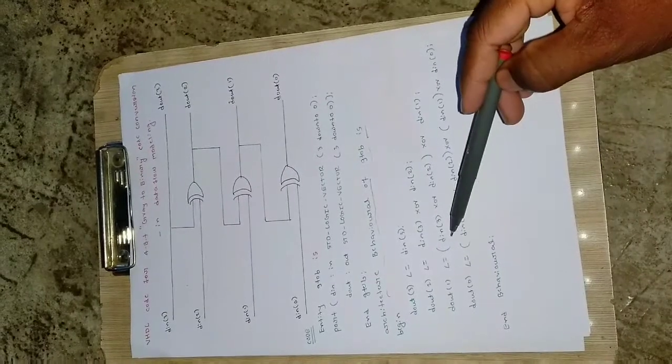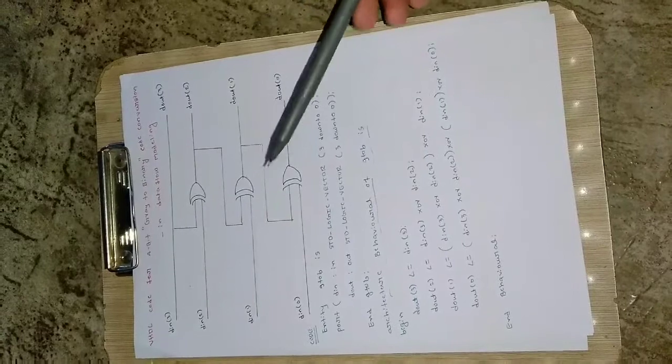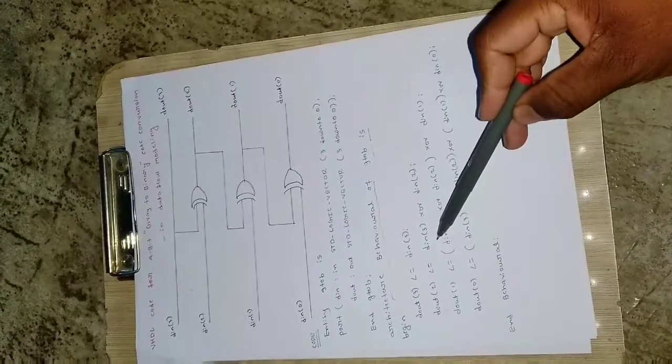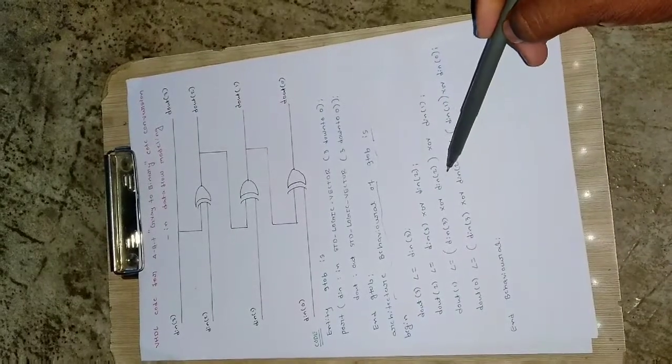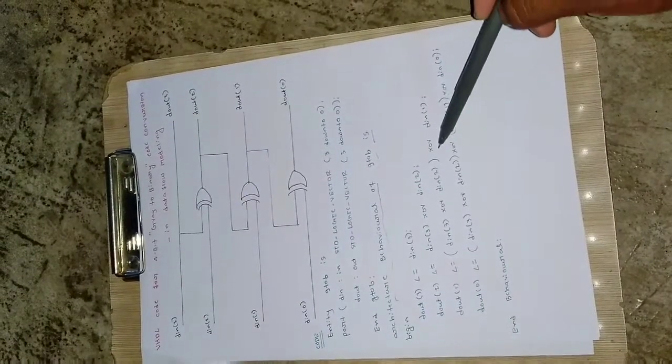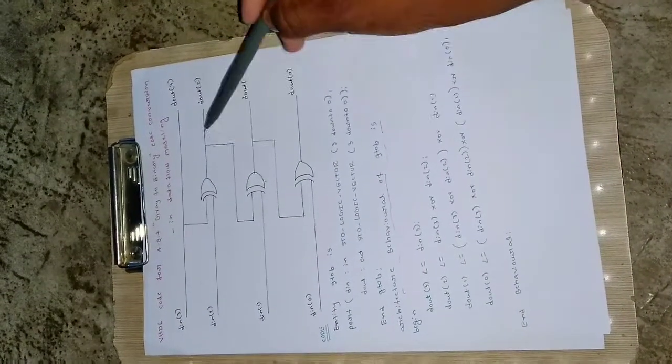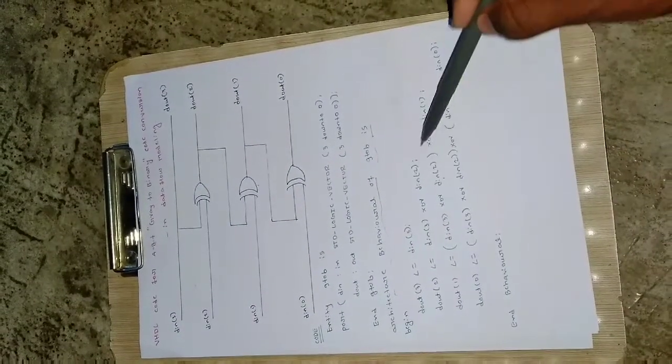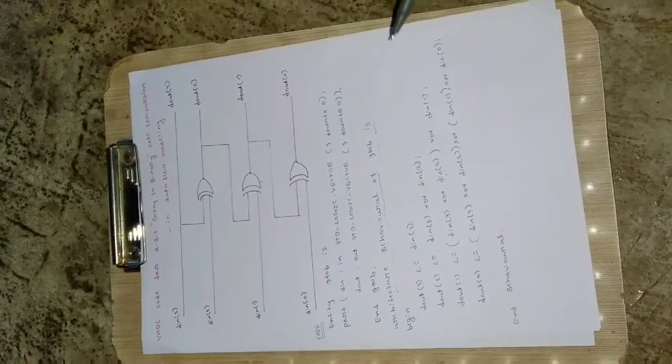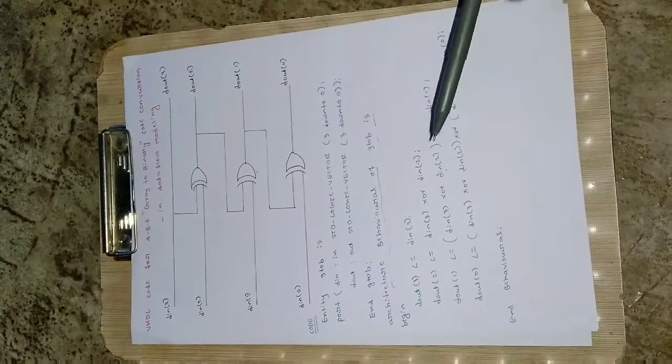For D out of 1, the inputs are D out of 2 and D in of 1. So D out of 2 is already known, so just copy this one. D in of 3 XORed D in of 2, and it is XORed with D in of 1. This first output is acting as an input, that's why I have taken this here.